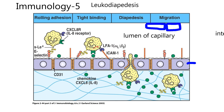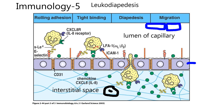Down here is interstitial space, and there would be some cells down here too. Now I've got you orientated. We've got the lumen of the capillary. I want to look at this cell right here below my red line — we're going to call that a neutrophil. That's going through the capillary. Capillary blood flow is really slow. There's a lot of time for things to happen in the capillary.